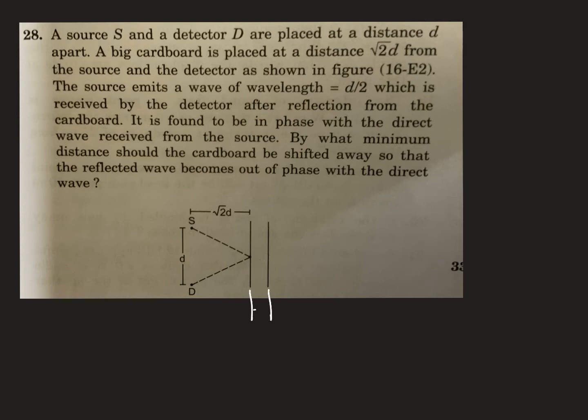Case 1: Let it be shifted by x. Later on corresponds to Case 2. So in Case 1, path difference delta x is equal to how much? Path difference between what? Path difference between the reflected sound, I mean the sound after reflection, and the directly received from the source.